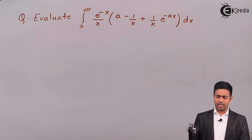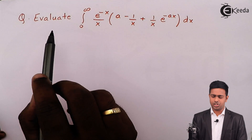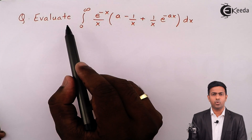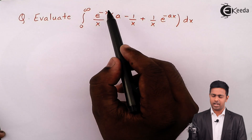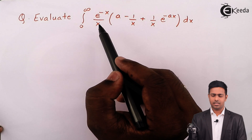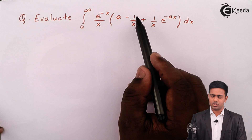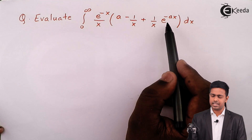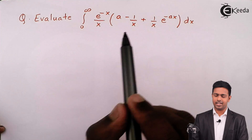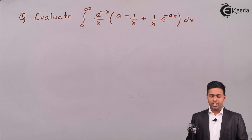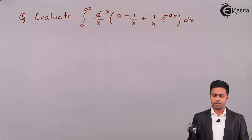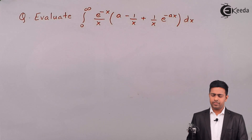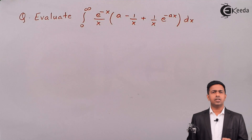Here we have a question: evaluate the integral from 0 to infinity of e raised to minus x squared upon x into (a minus 1 upon x plus 1 upon x) e raised to minus ax dx. To solve this integral by DUIS, we are going to follow certain steps.